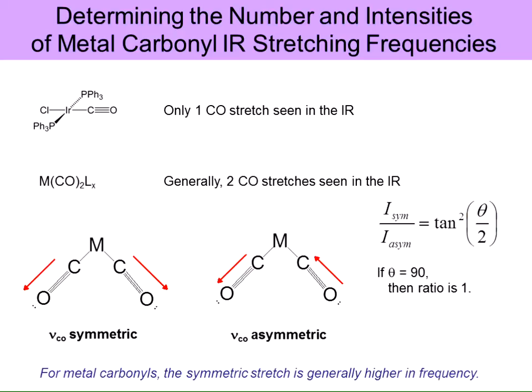If the angle theta is 90 degrees, then that ratio is going to be one, meaning the symmetric and the anti-symmetric stretch would have equal intensity. But if the angle is 180 degrees, that ratio is undefined, because you only see one peak in the spectrum since the asymmetric stretch is IR-inactive.